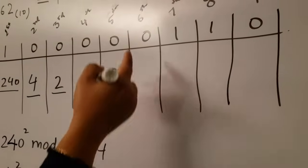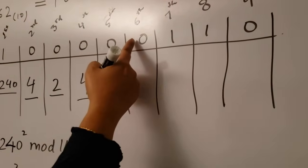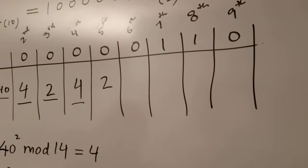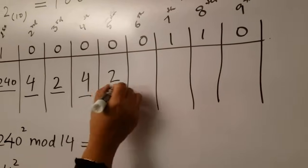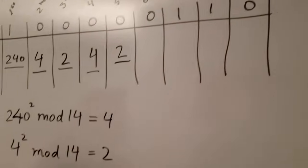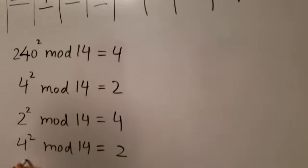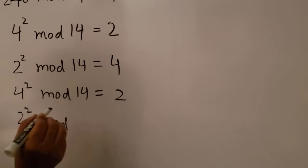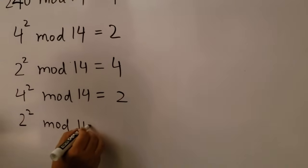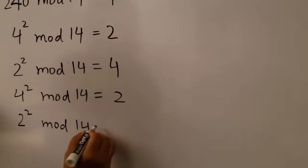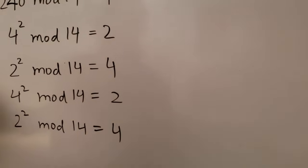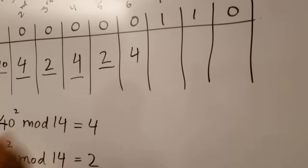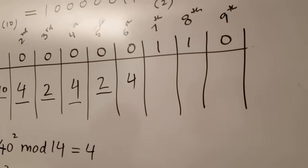Now look at the binary digit of the sixth column. Take two, square it, mod 14, which equals four. Write down four in the sixth column.